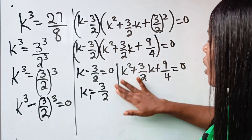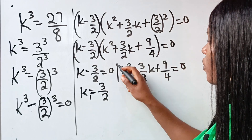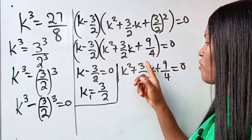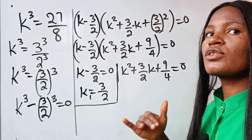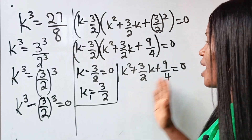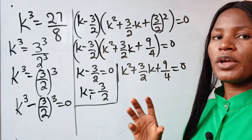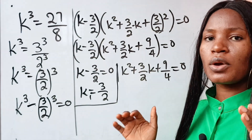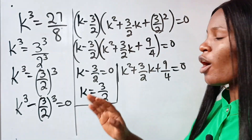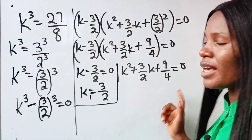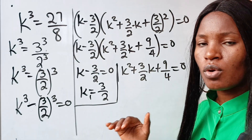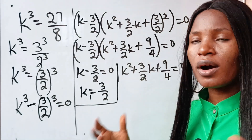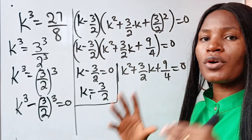Now we are going to get the second and third value of k from the quadratic factor. The question is we have fractions here. So how do we remove the fractions? When you have fractions with unknowns, the way to clear them is to multiply all terms by the LCM of the denominators. Our denominators are 2 and 4, and the LCM of 2 and 4 is 4.